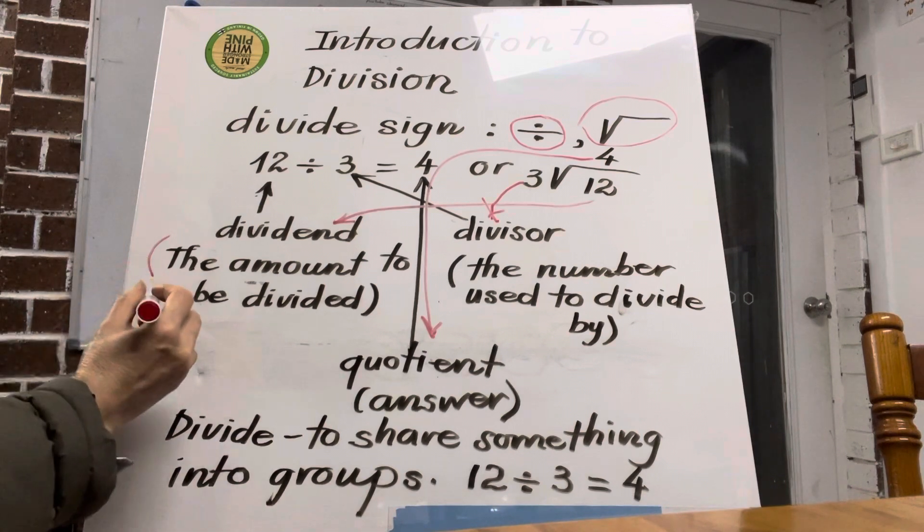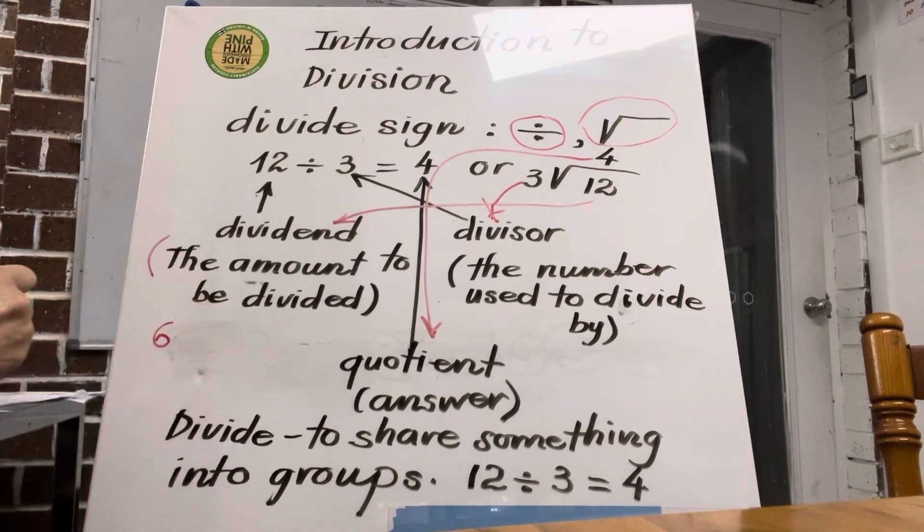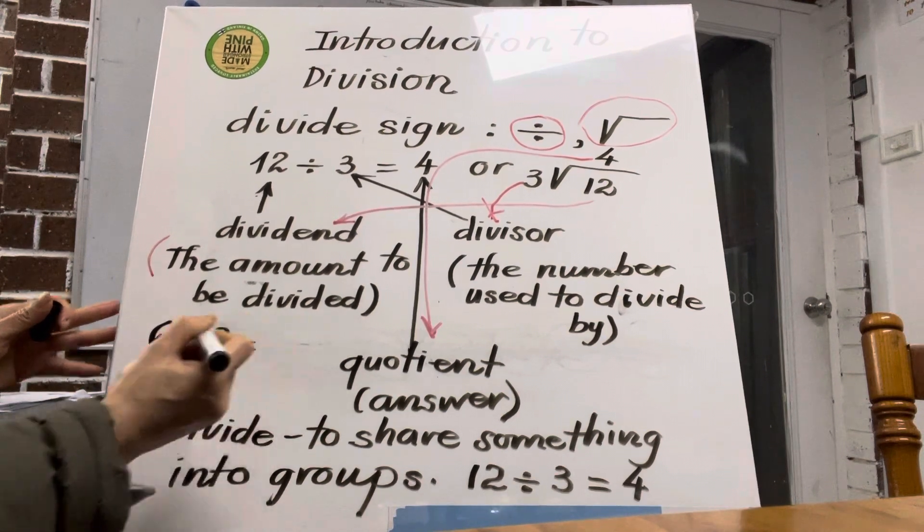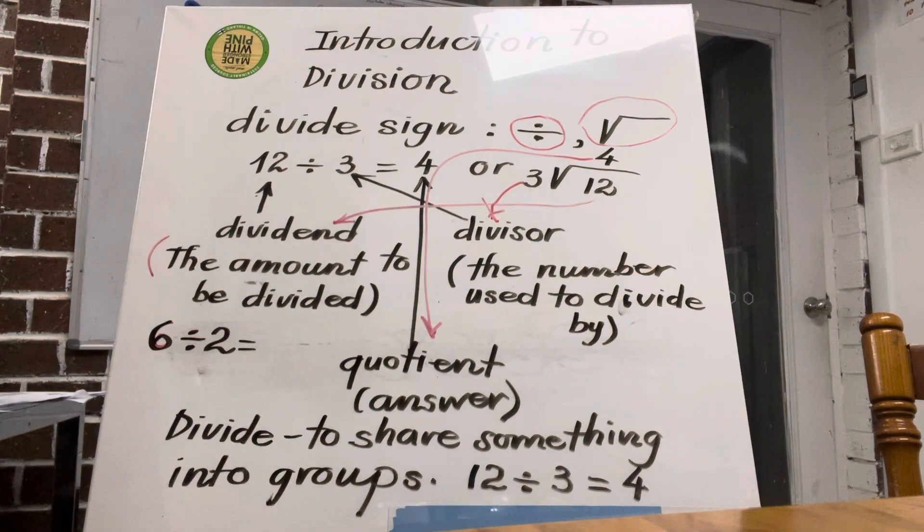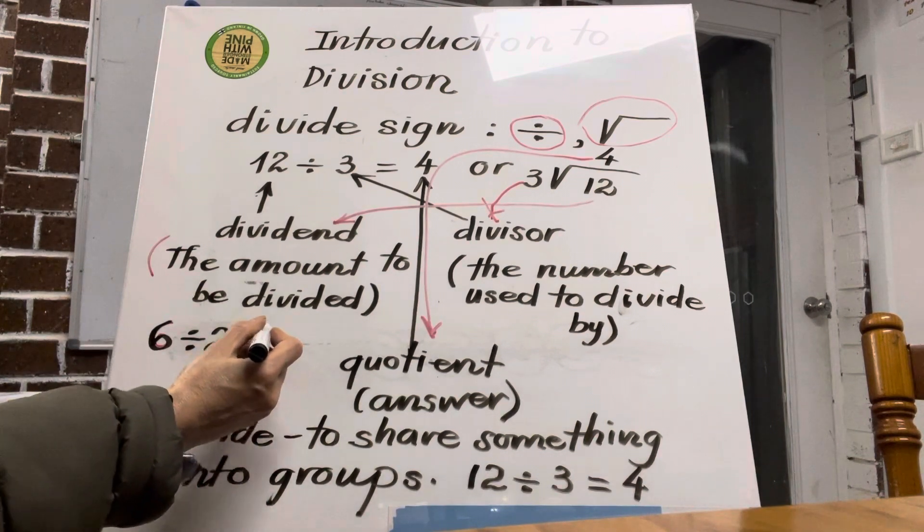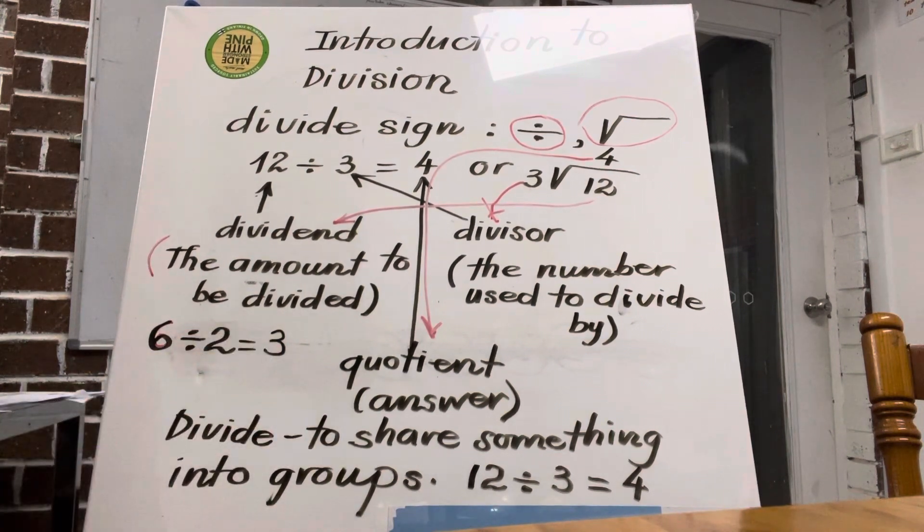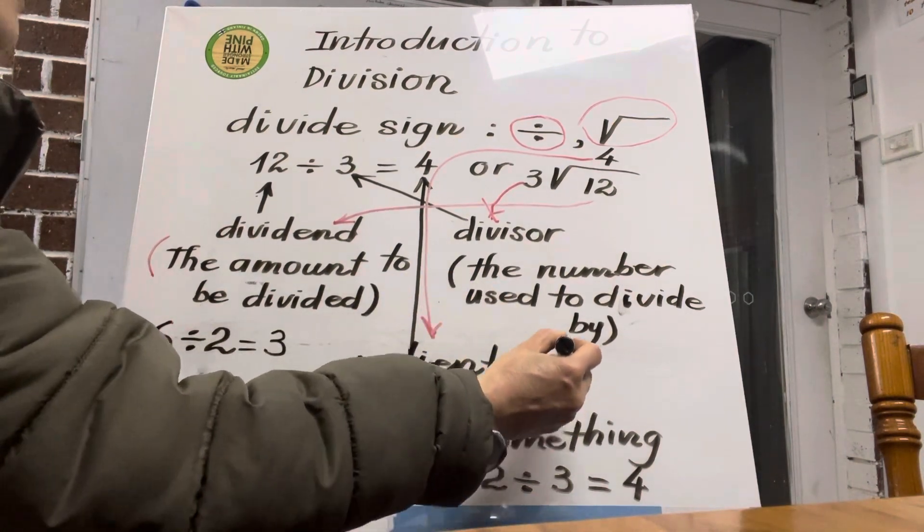For example, 6. Let's see, 6 divided by 2, what do you think the answer? 6 divided by 2, you got 6 lollies, you share for 2 kids, so how many lollies for each kid? So 2 times what number to make it 6? 2 times 3, yes or no? So 2 times 3 equals 6, yes. So another way, how we do it?